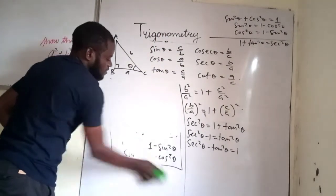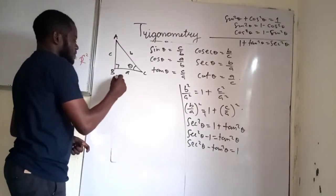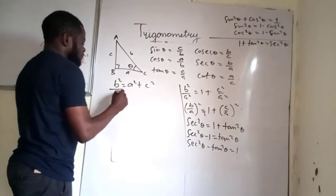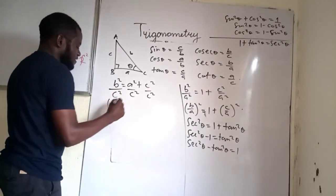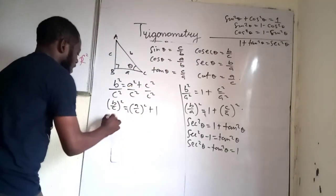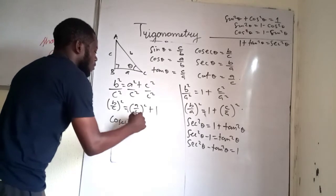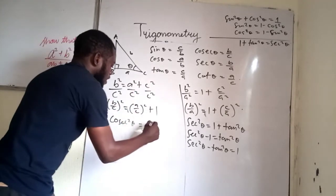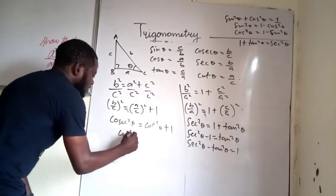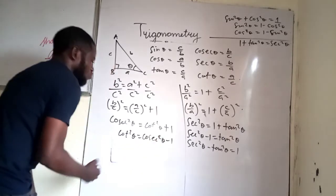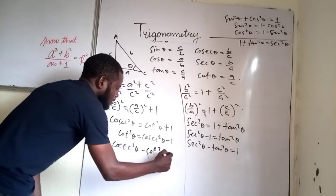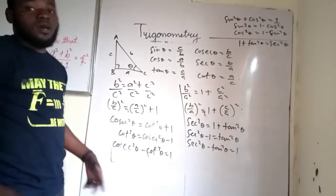For the third identity, divide equation one through by c². We get (b/c)² = (a/c)² + 1. Now b/c is cosecant theta and a/c is cotangent theta. So cosec²θ = cot²θ + 1. From this we can also say cot²θ = cosec²θ − 1, or cosec²θ − cot²θ = 1. That is our third identity.